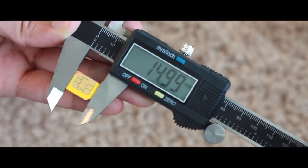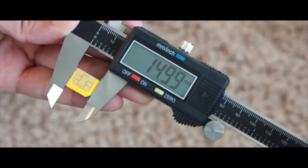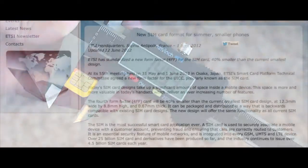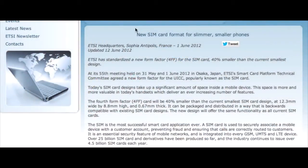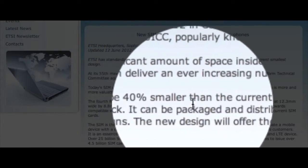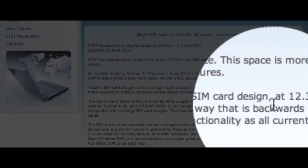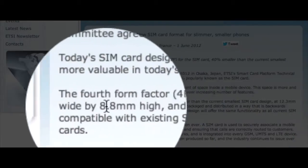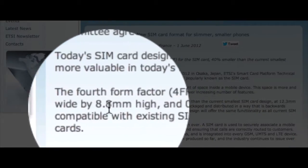Since we have these measurements, let's head over to the ETSI website and analyze the exact specifications for the nano SIM. The new SIM card format for slimmer, smaller phones. Here are the measurements: the fourth form factor card will be 40% smaller than the current SIM card design at 12.3 millimeters wide by 8.8 millimeters high and 0.67 millimeters thick.